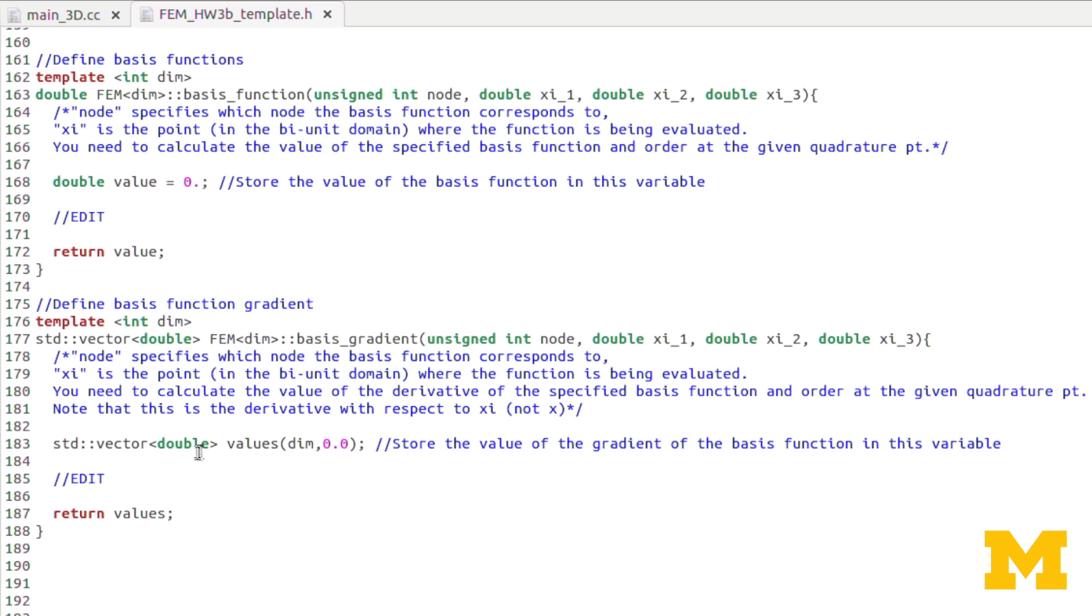Now again for the basis function gradient, we are storing the value in this values vector. The declaration is the same as 2D, but again, here, DIM is 3 instead of 2. So that automatically updates for the new dimension.